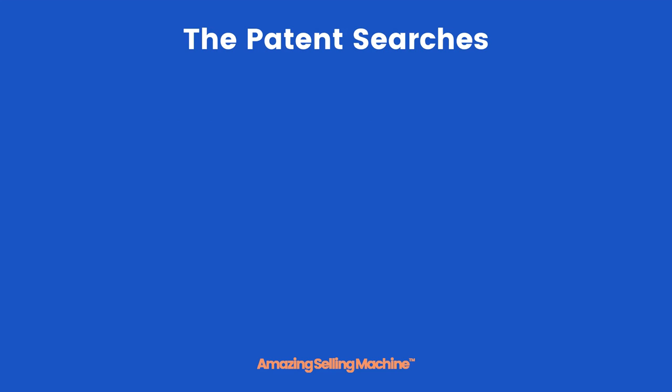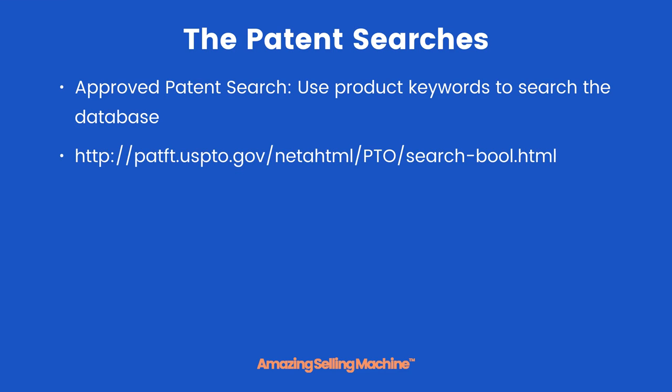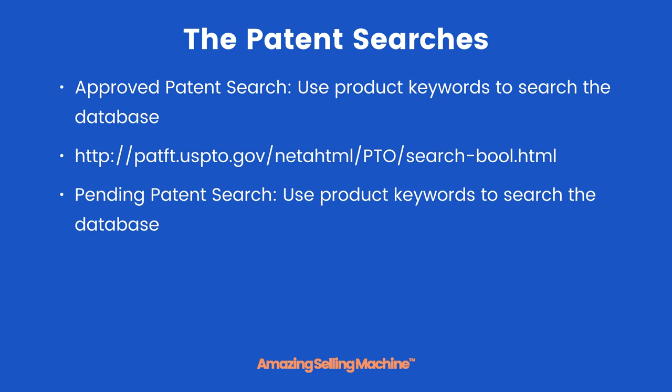There are two different patent searches. First, there is the approved patent search — use product keywords to search the database to see if there are any approved patents for the product. You can use the URL provided, which is also in the PDF you can download below this lesson.